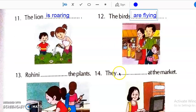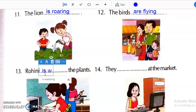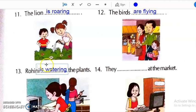Then, next Rohini dash the plants. Then, next they dash at the market. Market mein hum kya karne jate hain? What is shown here? Unke haath mein kuch cheeze hain? So, they are shopping. Here we will write they are shopping.